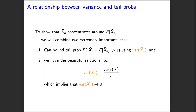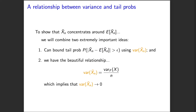If we can connect those two pieces — bounding a tail probability in terms of variance, and showing the variance goes to zero — then it seems reasonable we can say this probability goes to zero. So maybe it's three steps, but those two are really the key ideas. The way you bound a tail probability using variance is with Chebyshev's inequality.